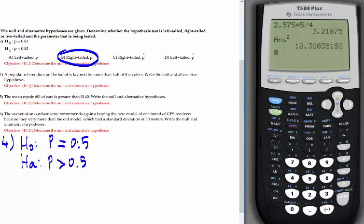There's another question. The mean repair bill of cars is greater than 140. Write the null and alternative hypothesis. H0, HA - you can also write H1, either HA or H1 doesn't matter. The mean, so we're talking about the population parameter mean, mu greater than 140 for the alternative, and mu equals 140 for the null hypothesis.